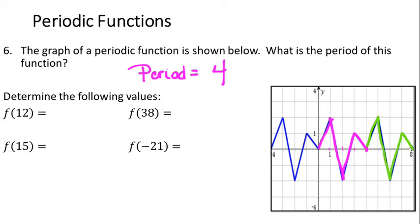Using the period of 4, we can determine function values beyond the graph. For f(12), I notice that 12 is a multiple of 4, and every 4 units we end up back at 0. At X = 0 we're at 0, at X = 4 we're at 0, at X = 8 we're at 0, so when X is 12, the function value is again 0.